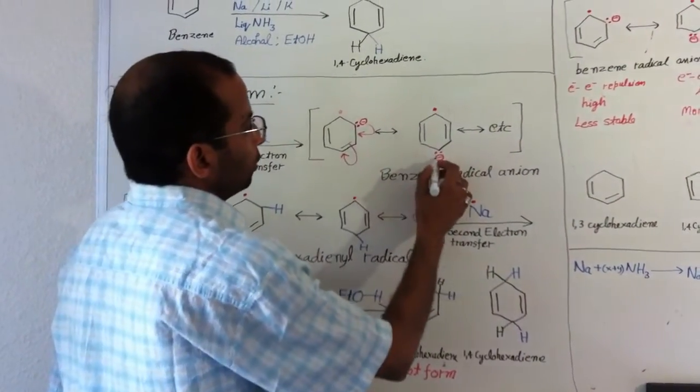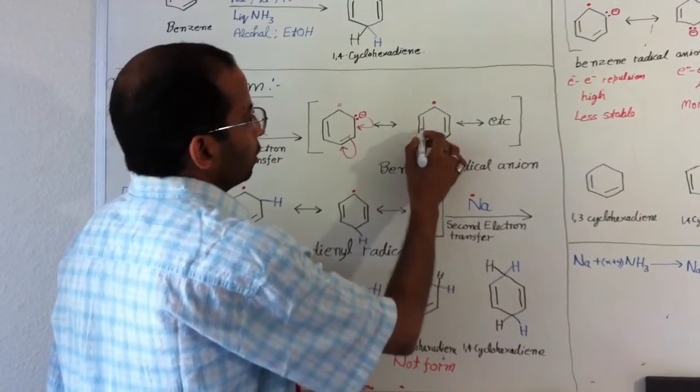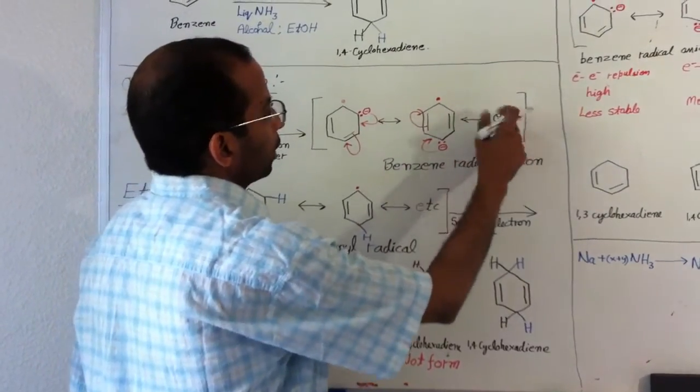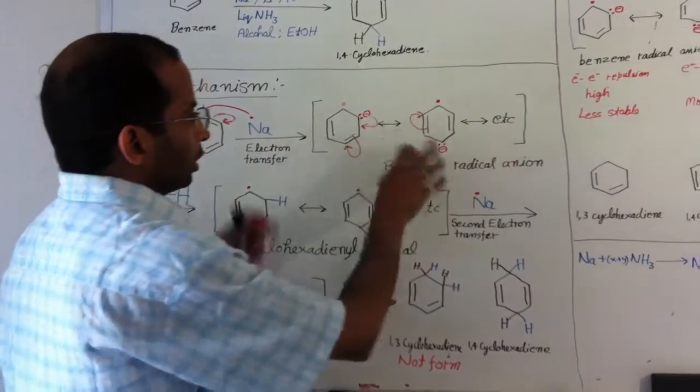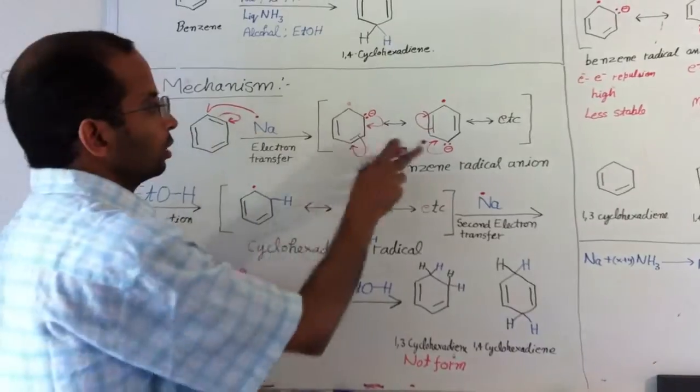Similarly, if you move these electrons once again, it will generate another mesomeric structure. So the electrons are very delocalized in the system.